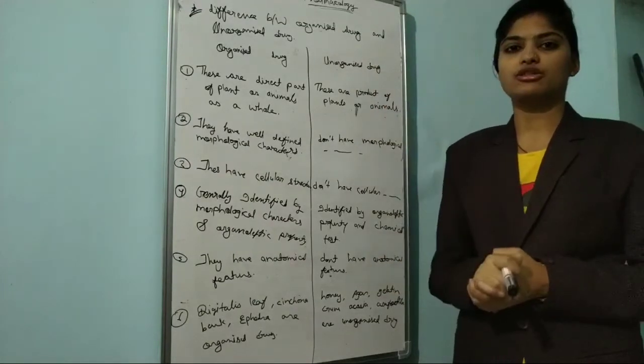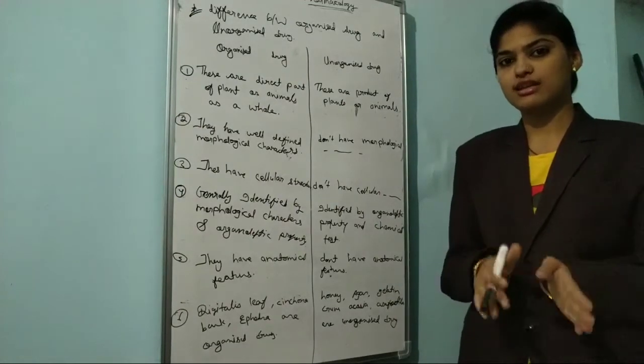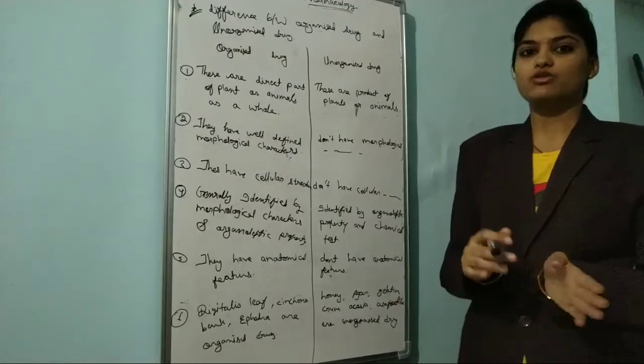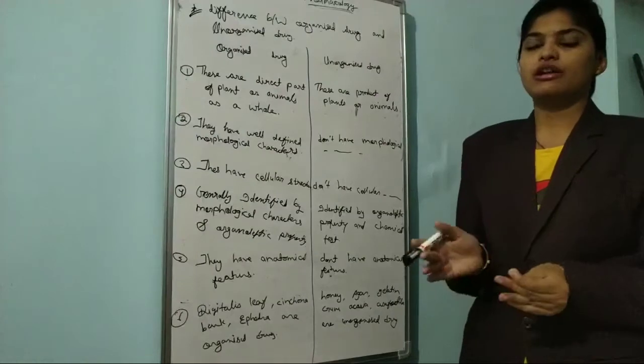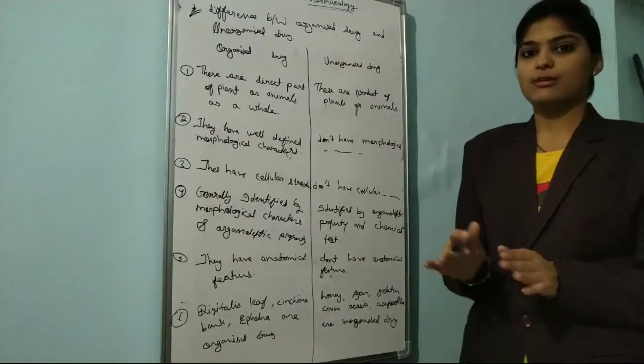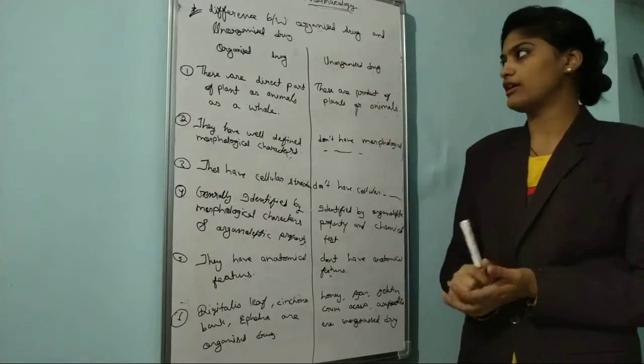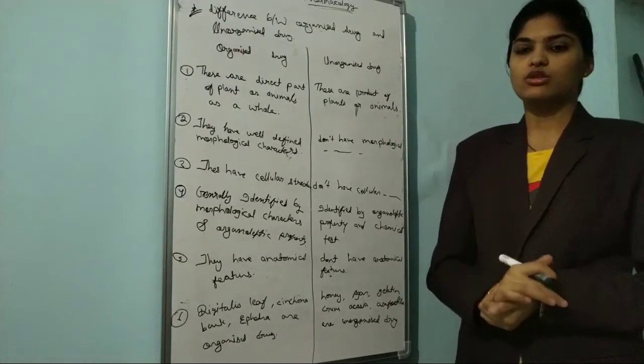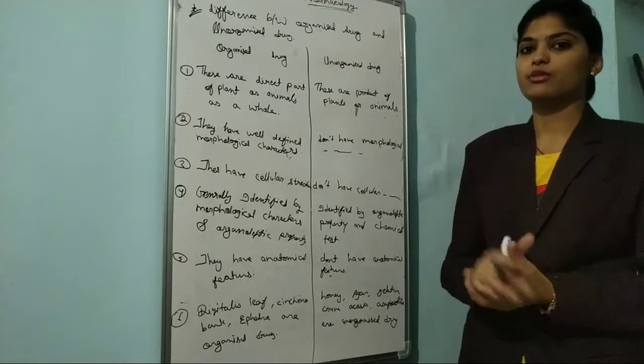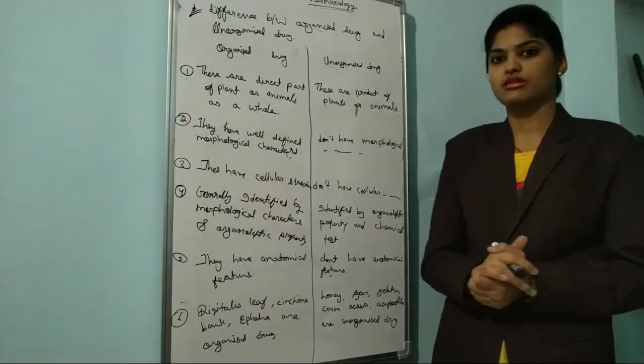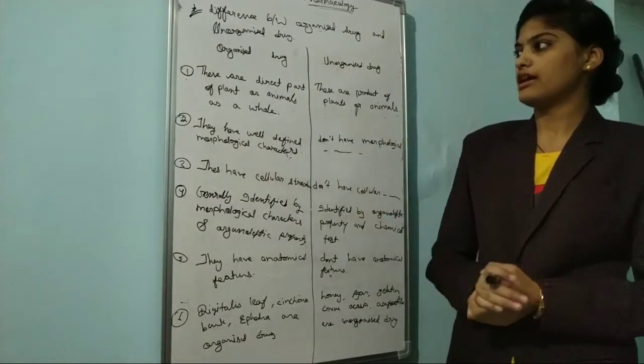Unorganized drugs are drugs that we get from plants, animals, or minerals, but we use them as a product. So it is called unorganized drugs. Like honey - honey is a direct product that we use. That is unorganized drugs, it's a product category.